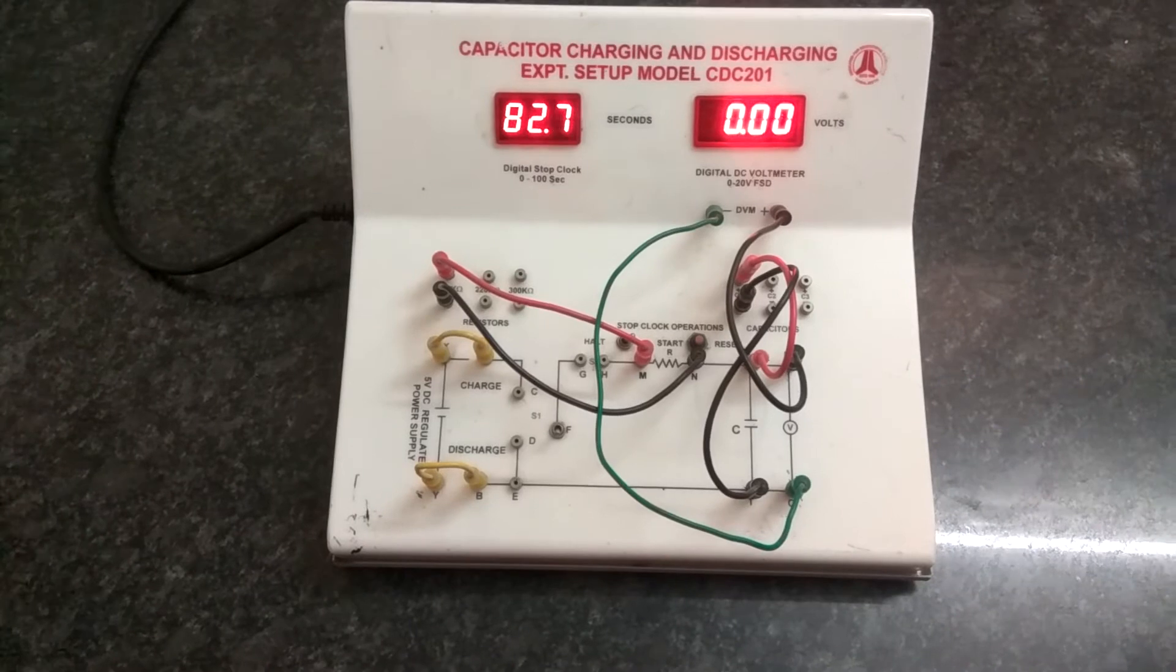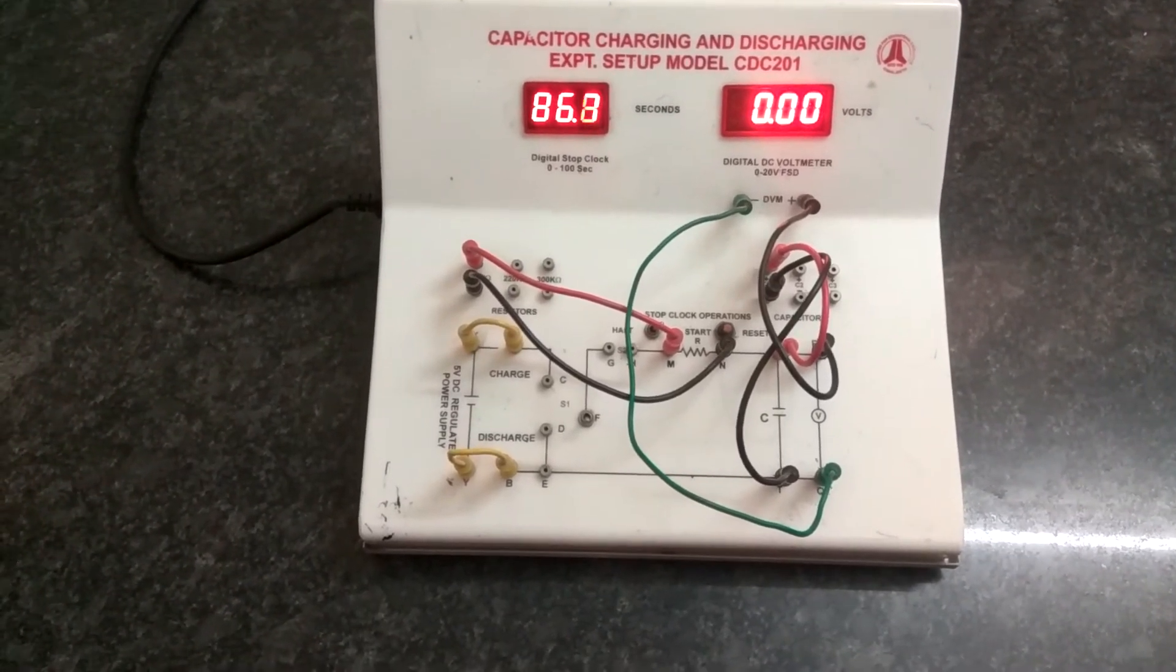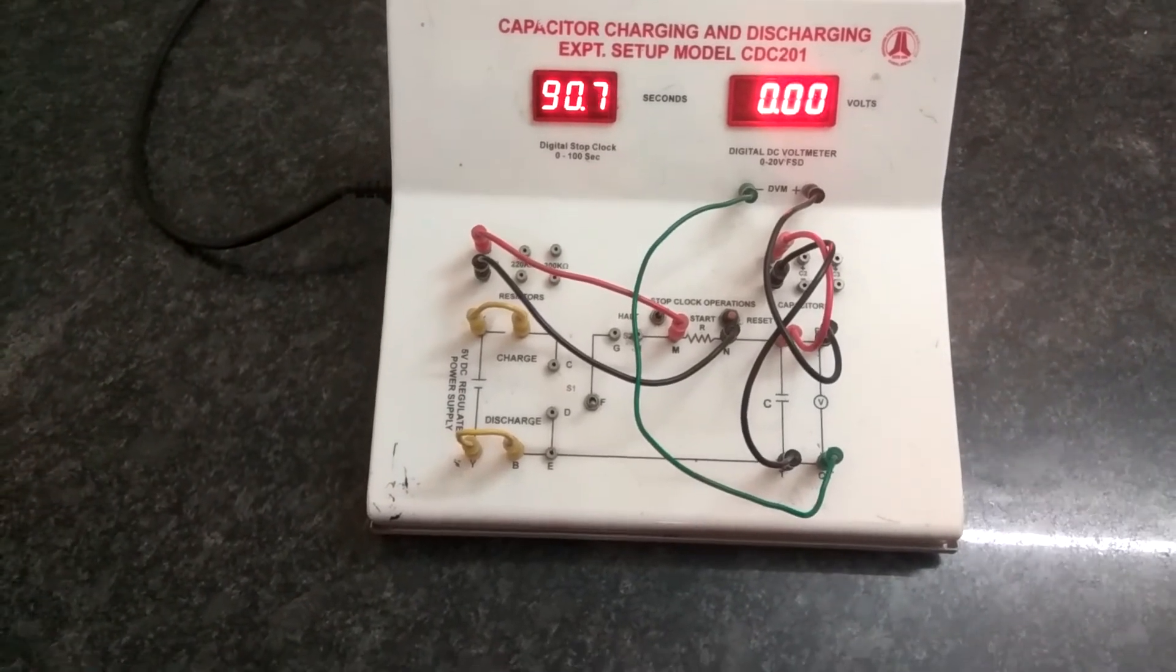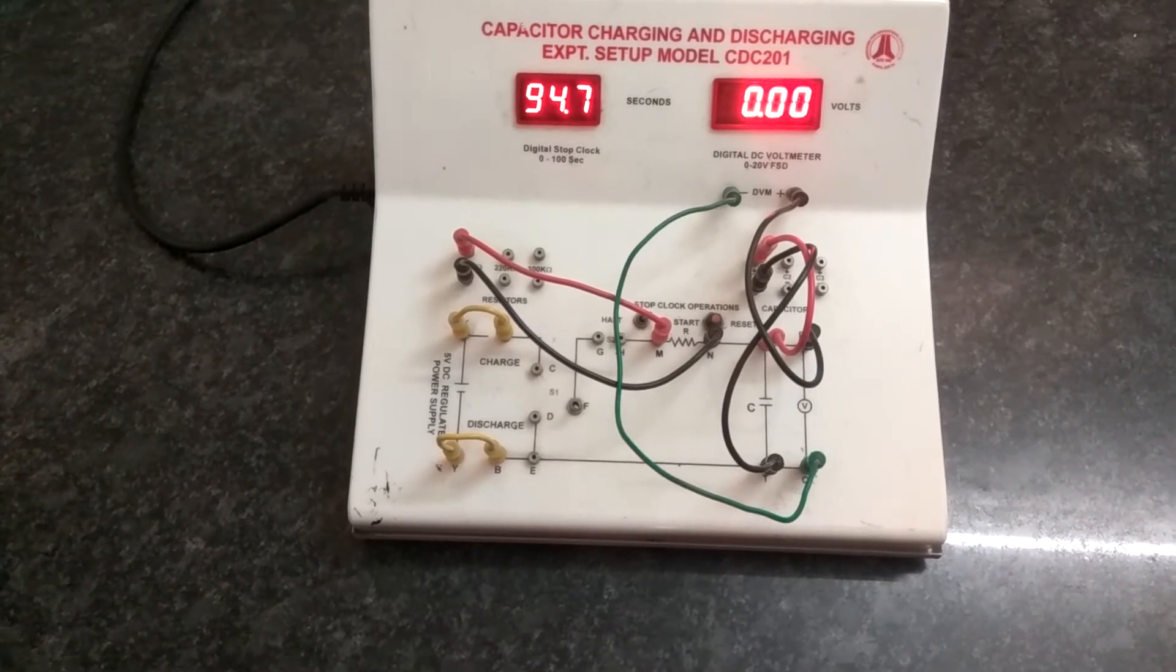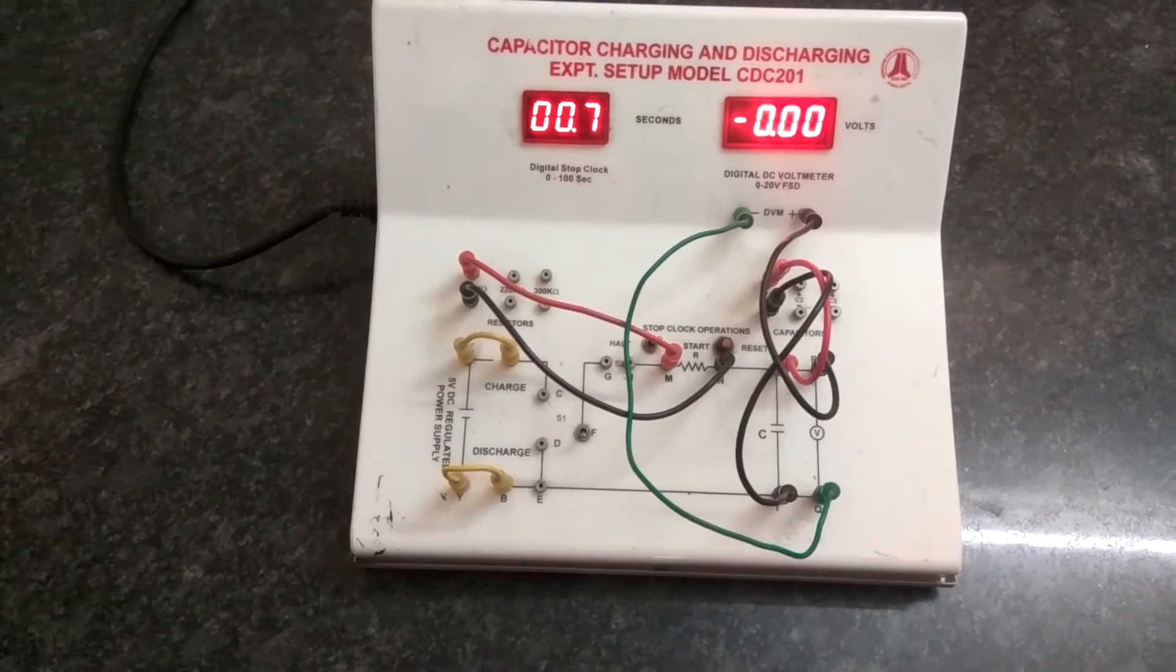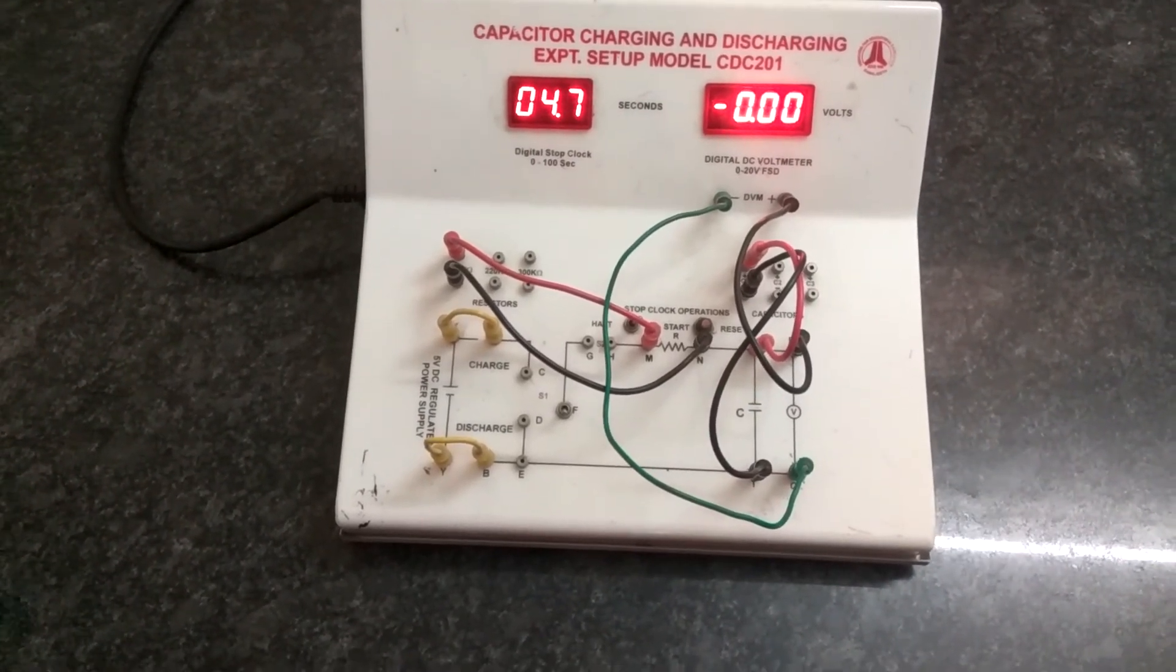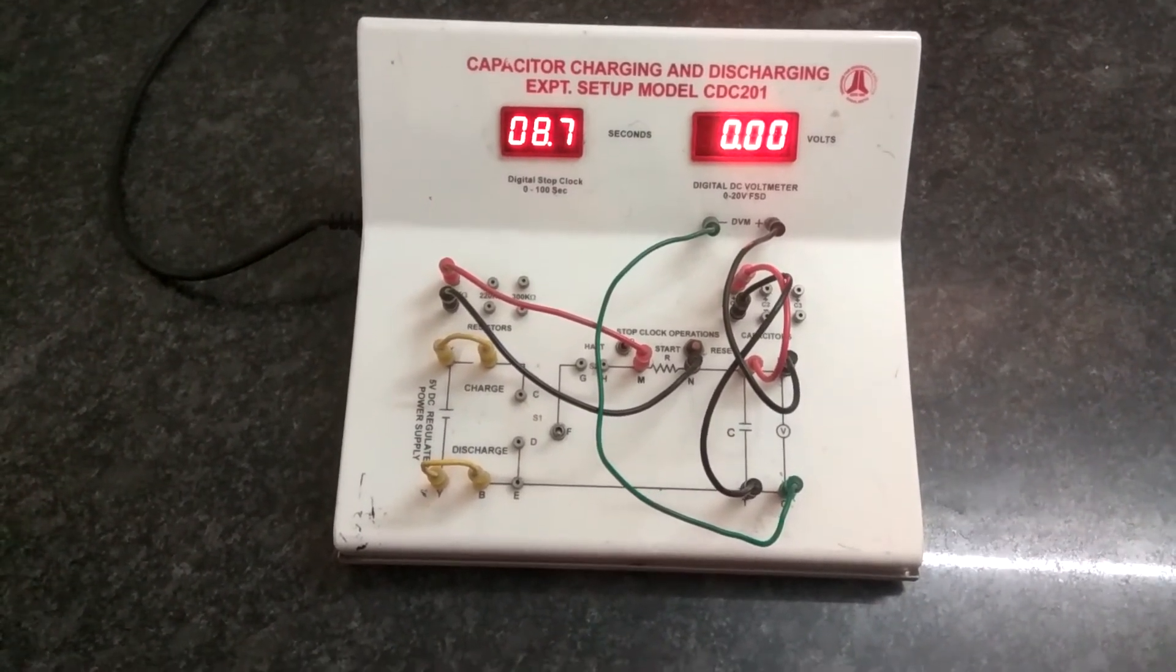And once, if you have recorded the values of the voltage for every 15 seconds, afterwards, a graph has to be drawn, taking the voltage along the Y axis and time interval along the X axis. So, along the X axis, take the one division value as 15 seconds. Take the voltage value along the Y axis for one division as 1 volt.